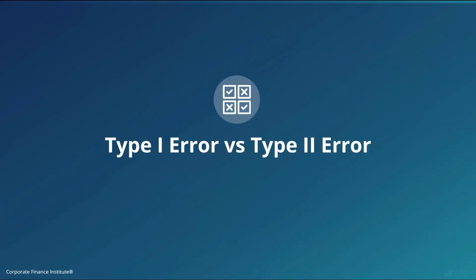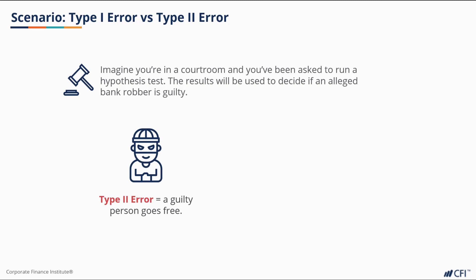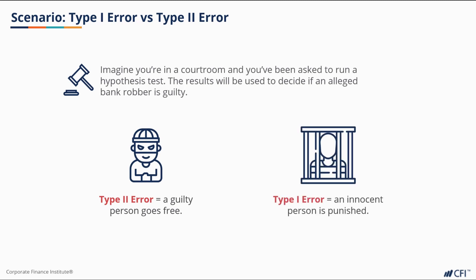Ideally, we don't want type 1 or type 2 errors, but in some situations one may be preferable over the other. Imagine you're in a courtroom and you've been asked to run a hypothesis test. The results of that test will be used to decide if an alleged bank robber is guilty. In this situation, a type 2 error would mean a guilty person goes free, but a type 1 error would mean an innocent person is punished for a crime they didn't commit. Most people tend to say that the type 1 error is a worse consequence — we'd rather a robber go free than an innocent person go to prison. In this scenario, we might want to assign our test a small alpha.